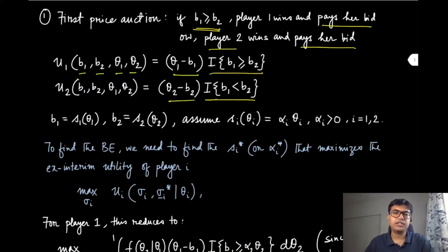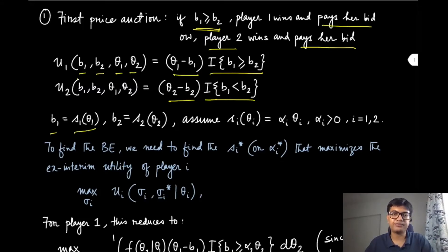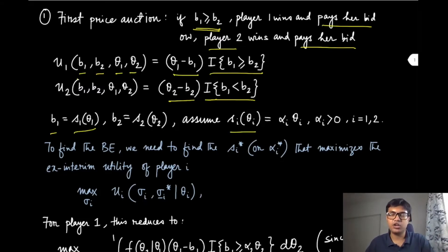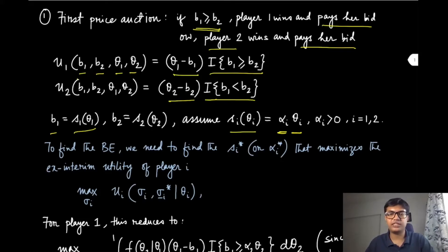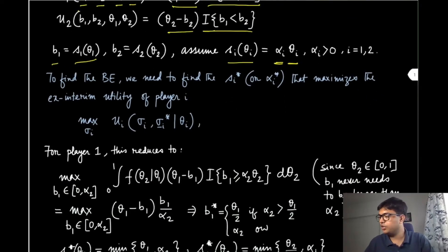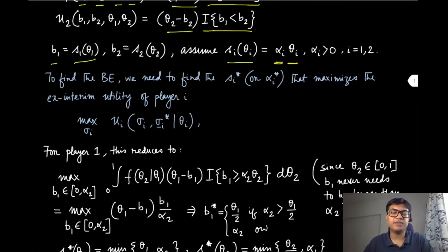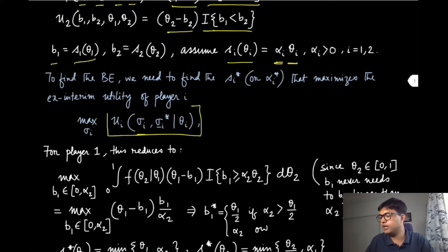Similarly, player two's utility can be written as a product of two terms. We now consider a simple bidding strategy: each player's bid is a multiplicative factor of their own type. If their type is theta_i, they choose their bid as alpha_i times theta_i, where alpha is positive and at most 1. This is an interim decision. To find the Bayesian equilibrium, we need to find the alpha_i* that maximizes the ex-interim utility for player i.